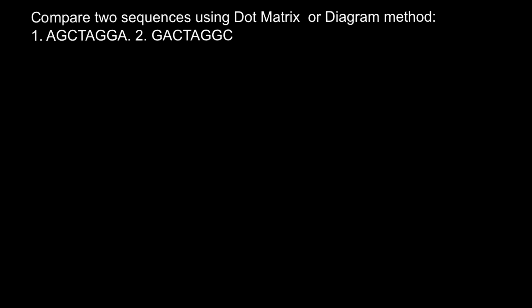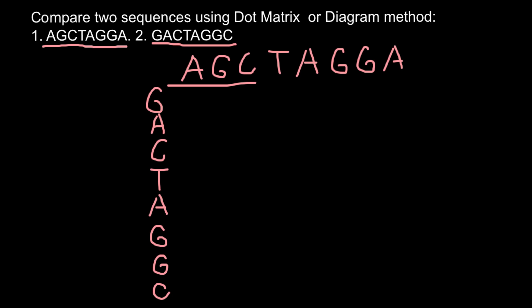This problem is actually very easy to solve if you know how to build a Punnett Square. The same principle applies here. On the top we put this sequence: A G C T A G G A, and on the side we put the second sequence: G A C T A G G C. Now we just build a table with rows and columns.